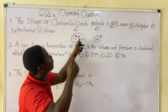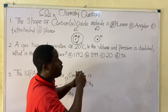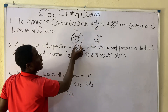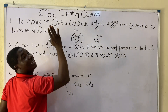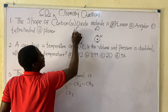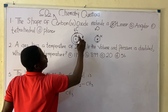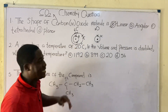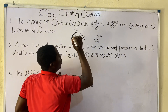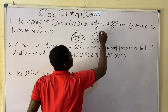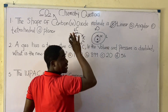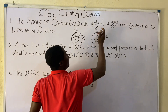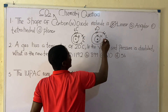The shell after the K shell is called the L shell. For carbon: we place 2 electrons in the K shell, leaving 4 remaining, which go into the L shell — giving us 2 and 4, so carbon's diagram is complete. For oxygen: 2 electrons fill the K shell, leaving 6 for the L shell, filling up to 8.